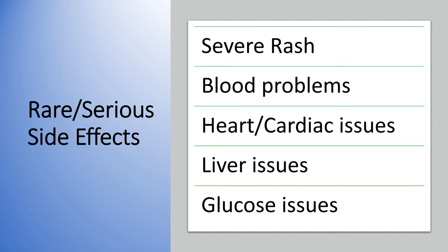Some of the rare and serious side effects include a severe full-body rash, blood issues that labs can help identify — which are more concerning with longer use — and cardiac effects including heart rhythm issues, which would be monitored in patients with pre-existing conditions. Rare liver issues and effects on blood sugar regulation can also occur.